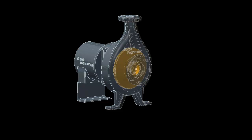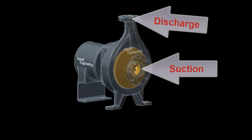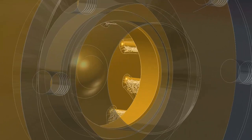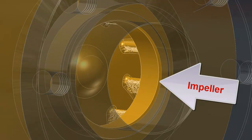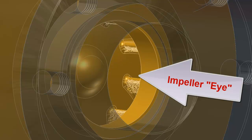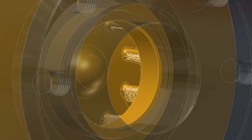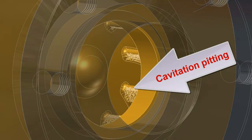This is an example of an end suction centrifugal pump. The inlet or suction end of the pump is here, and this is the outlet or discharge. If we zoom in closely, we can see the rotating impeller. This area is known as the eye of the impeller. If I pause the impeller for a moment, we can see some evidence of cavitation damage modeled into the impeller, as shown here.